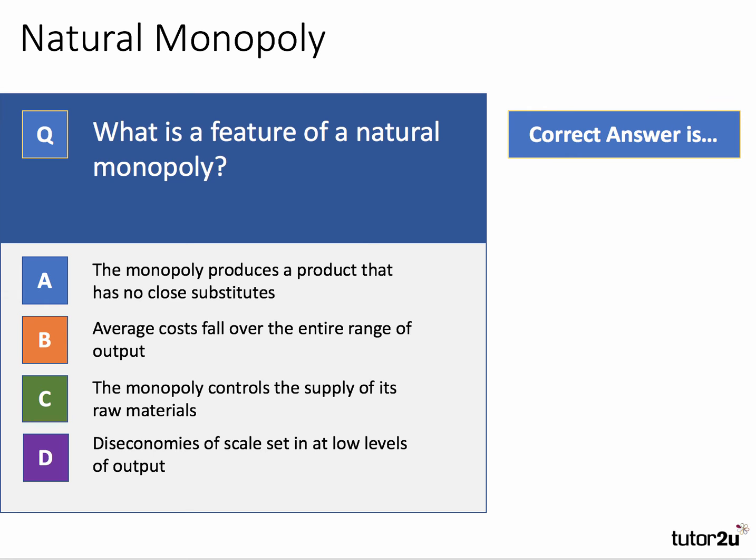Here's our first question: What is a feature of a natural monopoly? A, B, C, or D are your choices. Press the pause button, have a go at the question, and come back when you're ready for the answer.